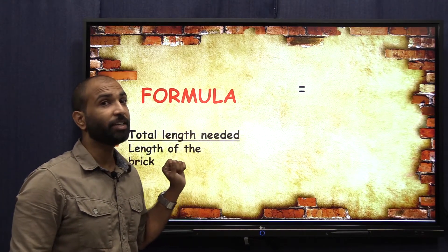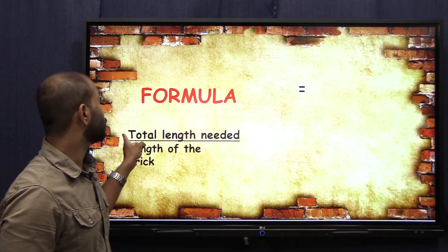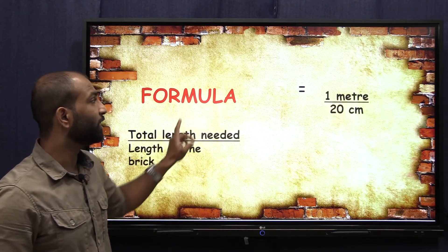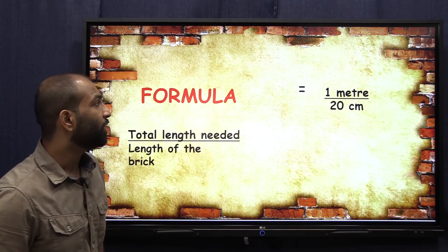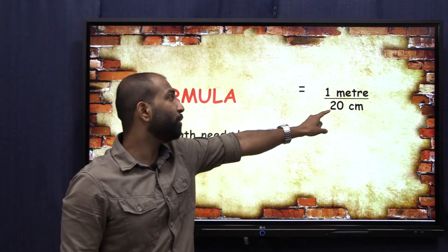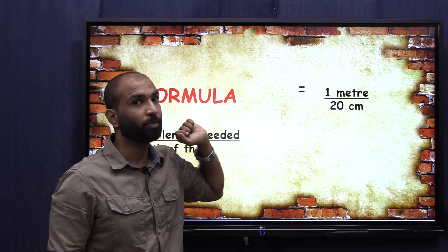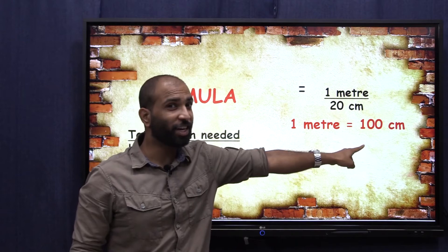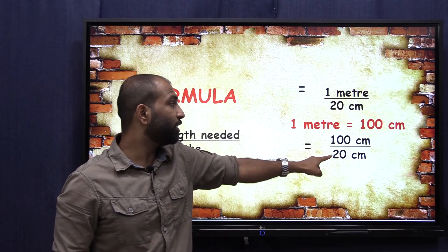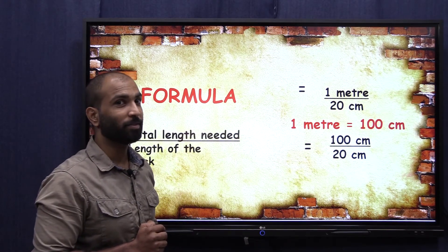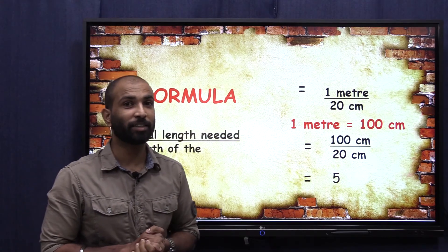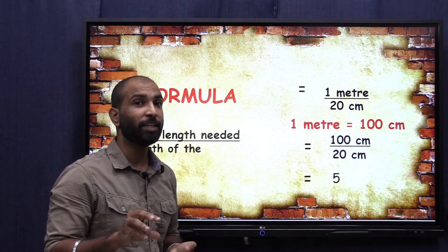The total length needed is one meter and the length of the brick is 20 centimeters. We need to make the units the same — since one meter equals 100 centimeters, we calculate 100 centimeters divided by 20 centimeters, which gives us 5. So Muniya needs 5 bricks to complete 1 meter.